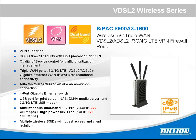This one is based on the Bocom 11AC solution with the latest code. It comes with 3x3 11AC — sync rate up to 1,300 Mbps — and 2x2 11N — providing a total wireless sync rate up to 1,600 Mbps. This one provides only single-user MIMO. If the user requires multi-user MIMO, we recommend the 8900LX-2400.